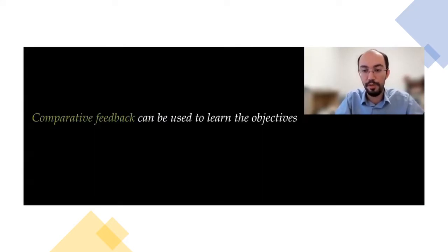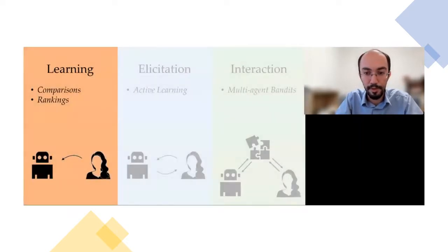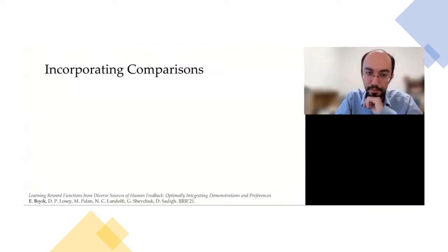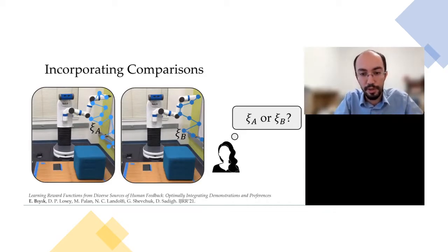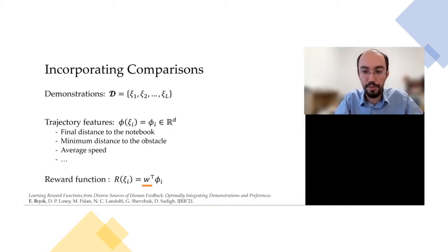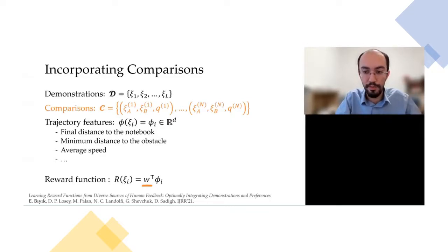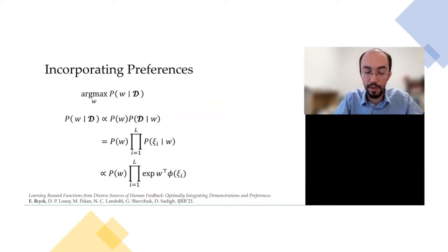So we need a better way of learning objectives. Our idea is to use comparative feedback to learn objectives accurately. When I say comparative feedback, that can be simply comparisons or richer forms such as rankings. In comparison data, the robot shows two trajectories to the user, and we ask whether she prefers trajectory A or trajectory B. Her response gives us information about her underlying reward function.